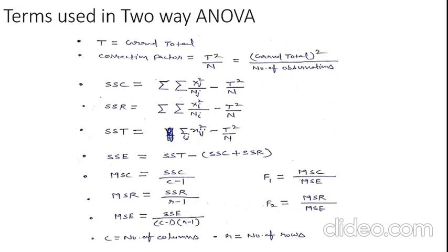Here are the two values of F. F1 will be equal to MSC upon MSE, so this is the value between the columns. F for the between the rows, the value of F2 will be equal to MSR upon MSE.